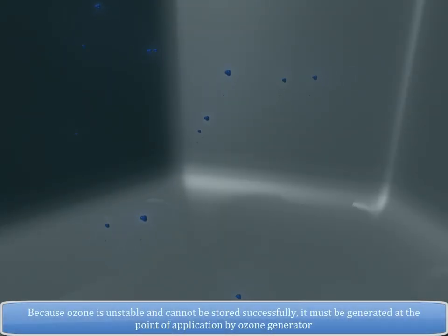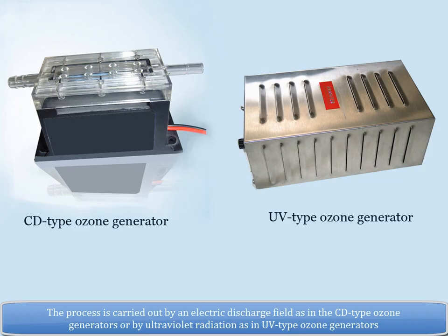Because ozone is unstable and cannot be stored successfully, it must be generated at the point of application by ozone generator. The process is carried out by an electric discharge field as in the CD type ozone generators or by ultraviolet radiations as in UV type ozone generators.